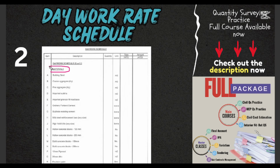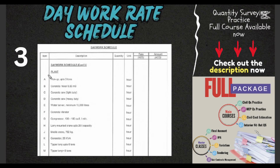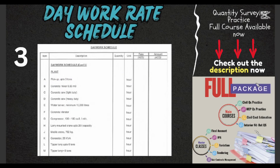The material schedule is filled with material details. The third item is the plant or machinery related schedule. In this schedule we use equipment — for example, pickups, concrete mixer, water tank, and concrete vibrators. These are plants and equipment. So in the day work schedule there are three important items: one is the labor schedule, the second is the material schedule, and the third is the plant and machinery schedule.